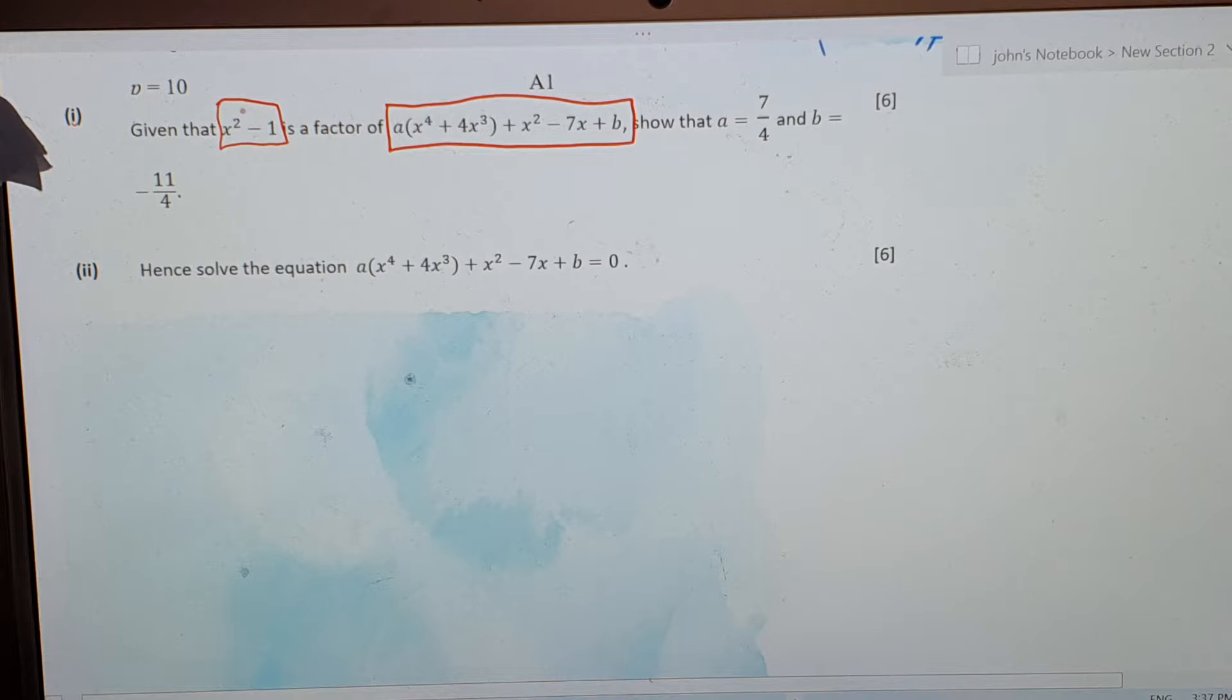Now you should notice that this quadratic expression here can be factorized into x plus 1 times x minus 1. Which means that if this is a factor of this, then individually, when you factorize this, each of this should also be a factor of this. Now once you know that, you can easily show this and this.